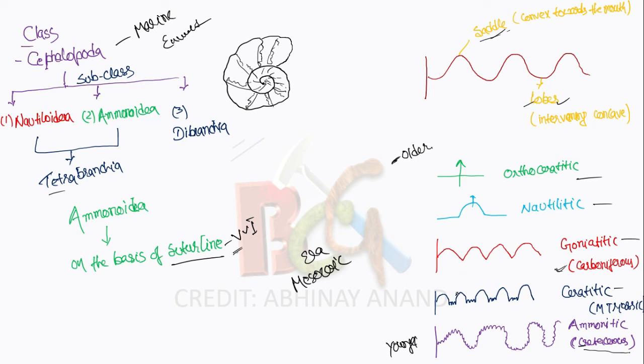After that, when the evolution is more advanced than the previous curve, in both the saddle and loop parts, the loop part becomes zigzag form. This is called serratitic from the middle Triassic age. Then, when the overall shape of both saddle and loop becomes zigzag, this is called ammonitic from the Cretaceous age.